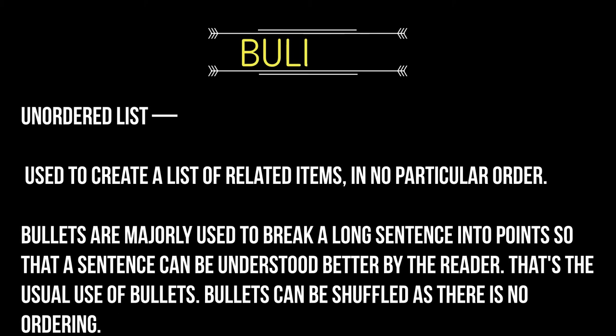Hi everybody, today we are going to see how to use bullets and numbering in MS Word. There are two types of lists: ordered list and unordered list. Unordered list (bullets) is used to create a list of related items in no particular order. Bullets are majorly used to break a long sentence into points so that it can be understood better by the reader.